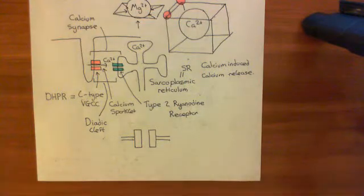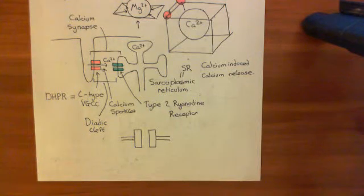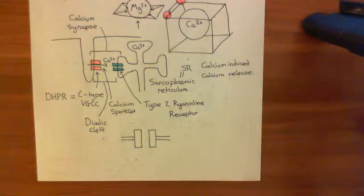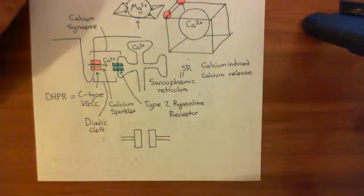Welcome to this next video in which we are discussing pathological cardiac hypertrophy. We're having a brief discussion of how the sympathetic nervous system activates the cardiomyocytes to contract more powerfully, i.e. how it has a positive inotropic effect.